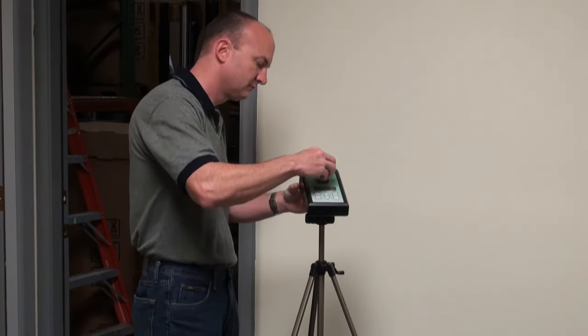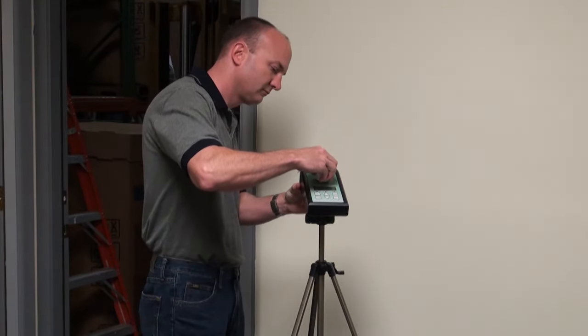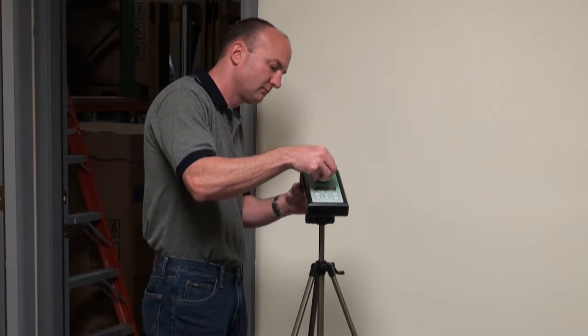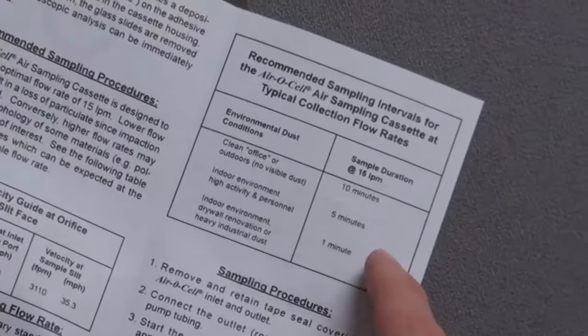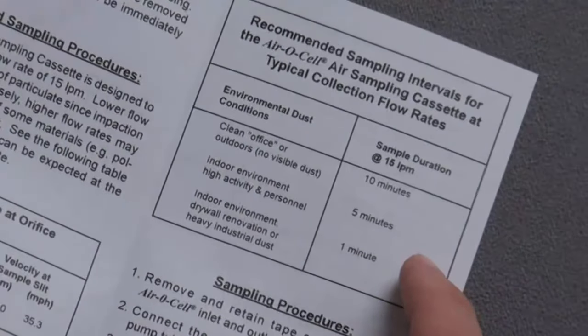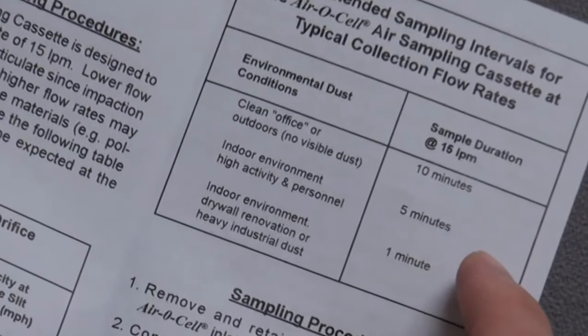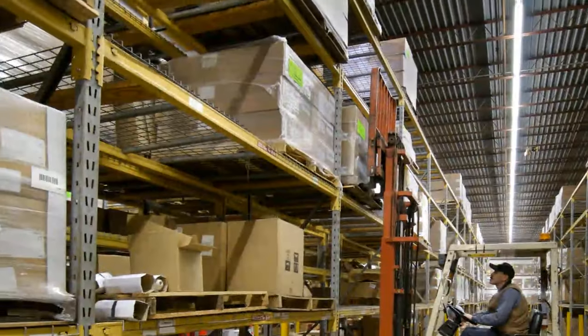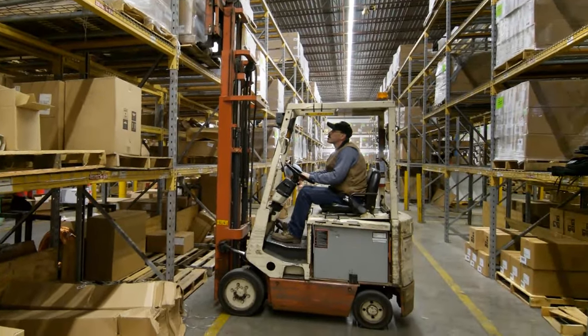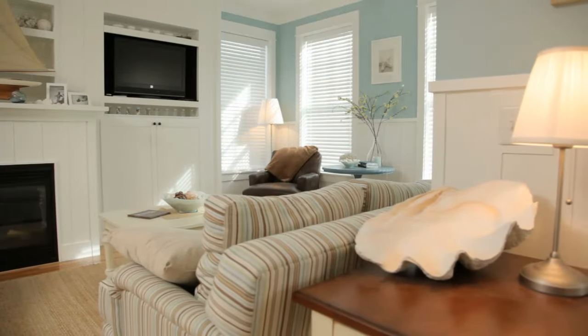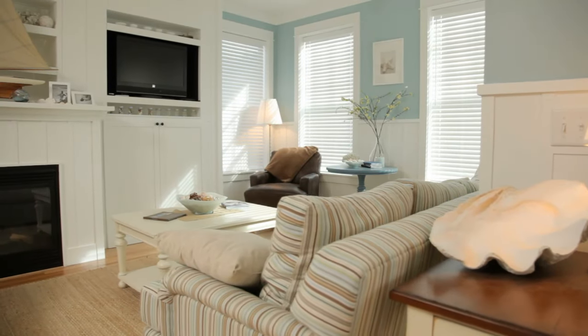This air sample is considered a snapshot in time and only represents the particulate present in a location sampled at that time. Refer to the sampling chart to determine a sampling duration time based upon the density of the particulate in the environment. Exceptionally dusty locations will require a shorter sampling time than a relatively clean home, office, or outdoor environment.